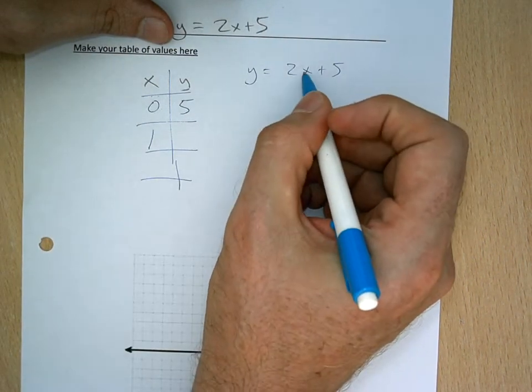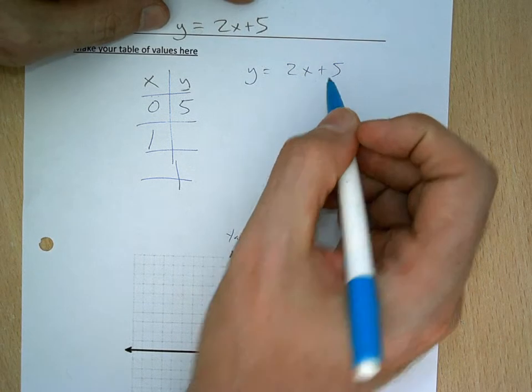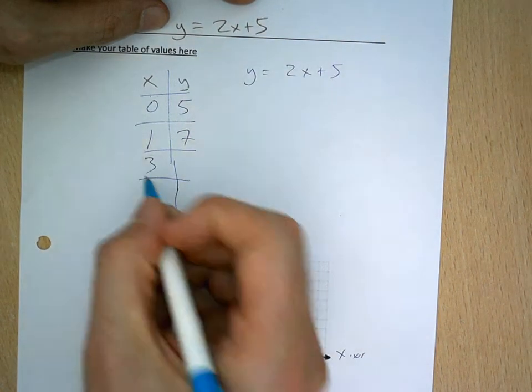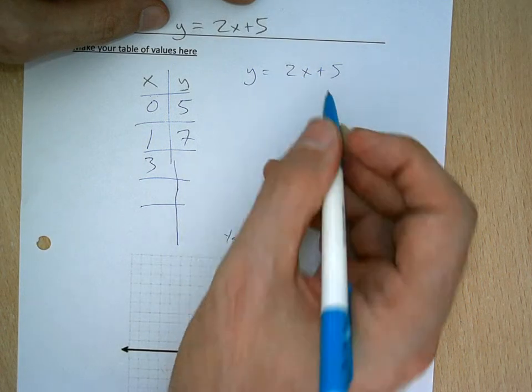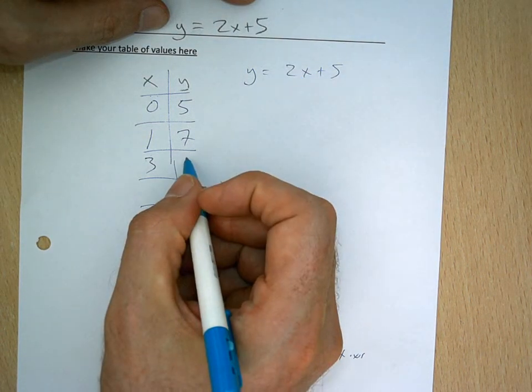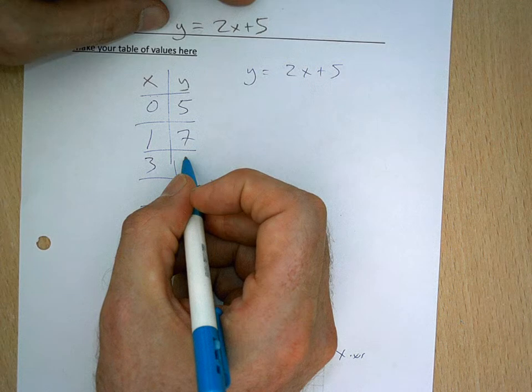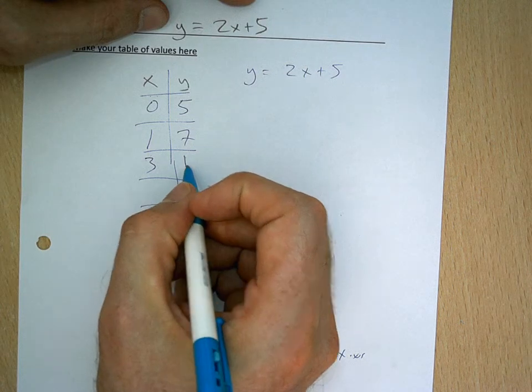If I put in like 1 for x, 2 times 1 is 2, plus 5 is 7. We can actually see kind of a little pattern here. If I put in 3, 3 times 2 is 6, plus 5 is 11.